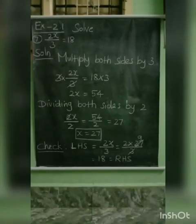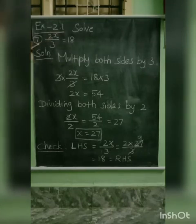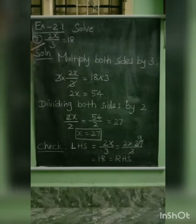Now, Exercise 2.1, 7th sum: to solve 2x by 3 equal to 18.